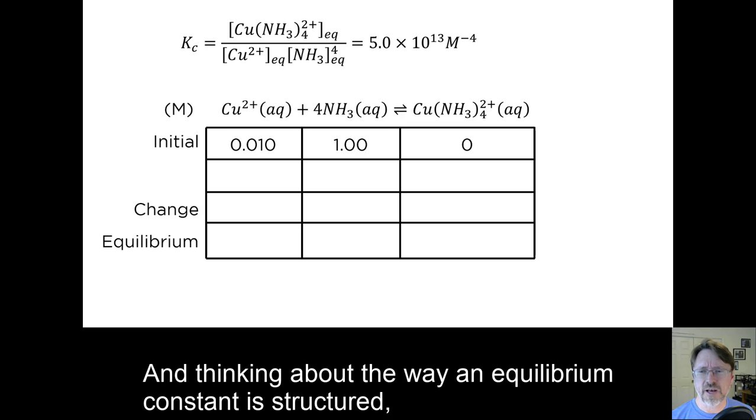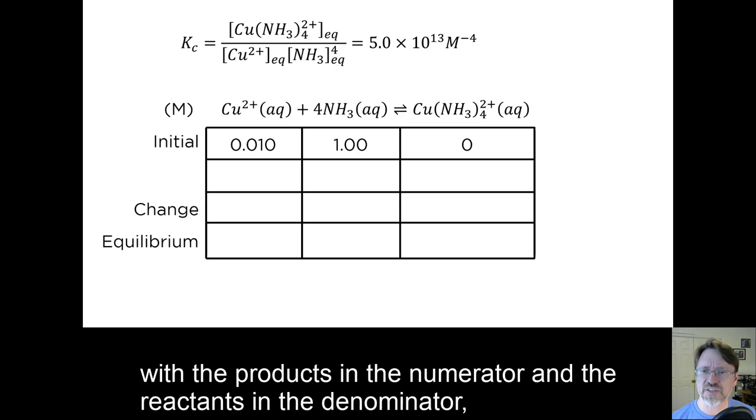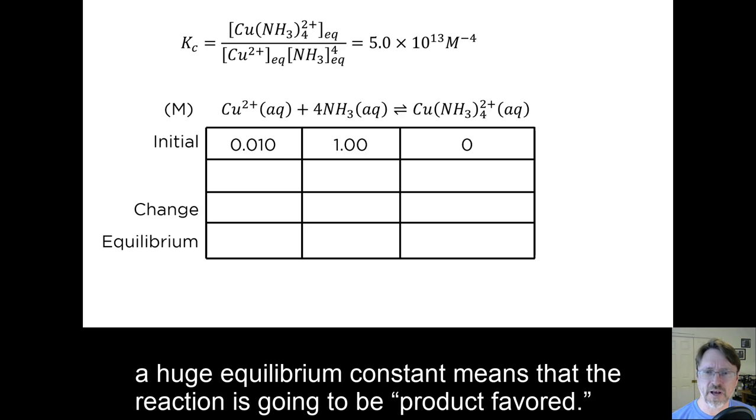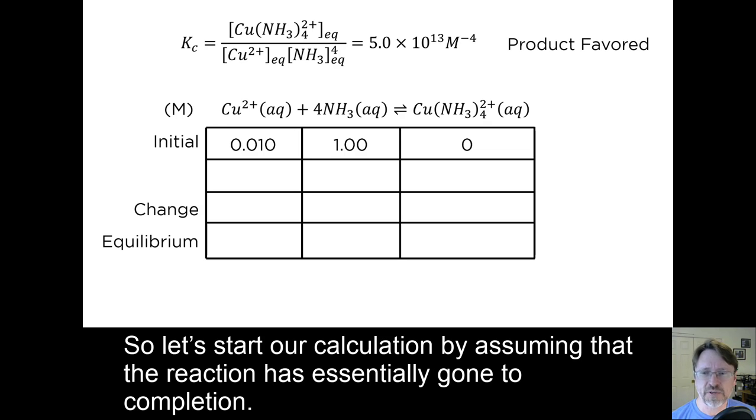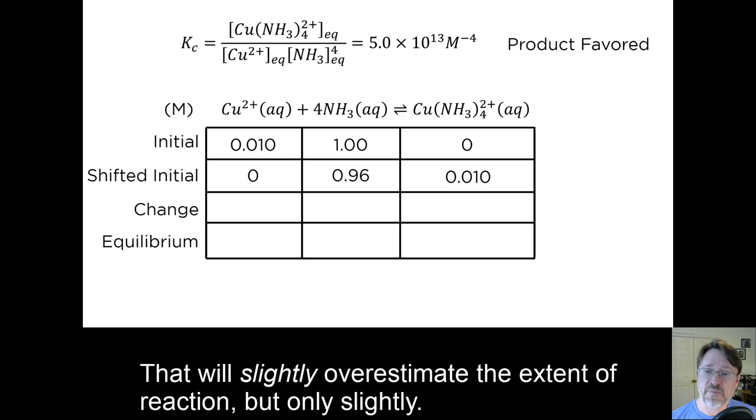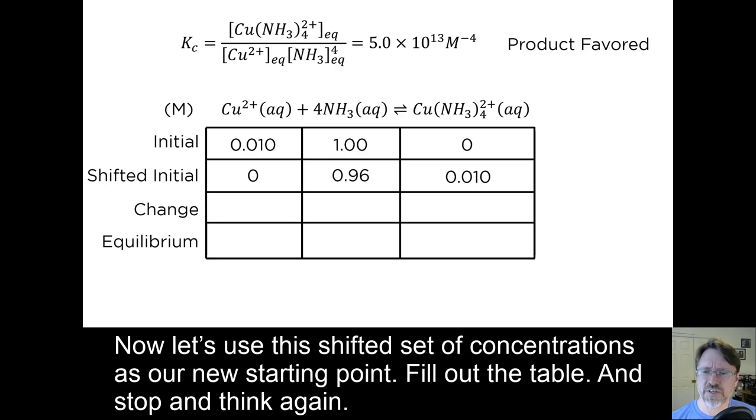The first thing to notice is how huge this equilibrium constant is. And thinking about the way an equilibrium constant is structured, with the products in the numerator and the reactants in the denominator, a huge equilibrium constant means that the reaction is going to be product favored. So let's start our calculation by assuming that the reaction has essentially gone to completion. That will slightly overestimate the extent of reaction, but only slightly. Now let's use this shifted set of concentrations as our new starting point. Fill out the table, and stop and think again.